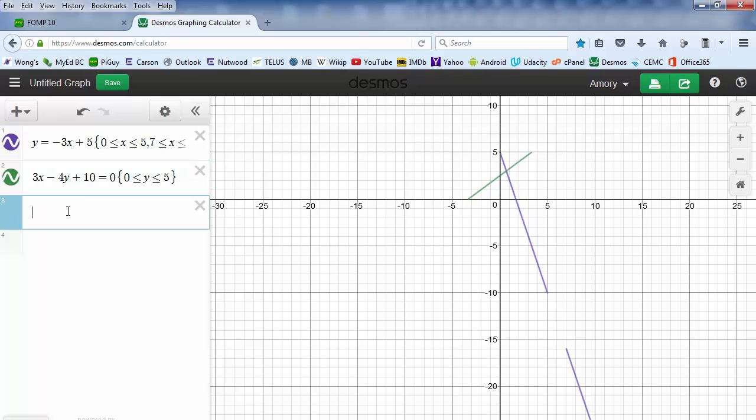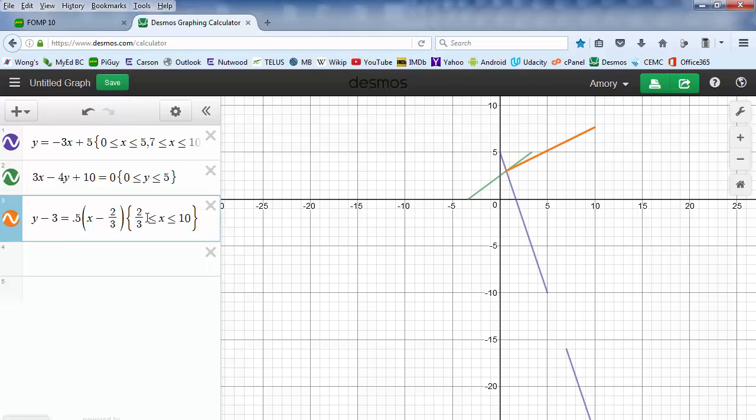And now we can use point slope form. Y minus 3 equals 0.5 times x minus 2 divided by 3. And I want to limit this from 2 thirds is less than or equal to x is less than or equal to 10. Okay, and that's how we create basic lines.